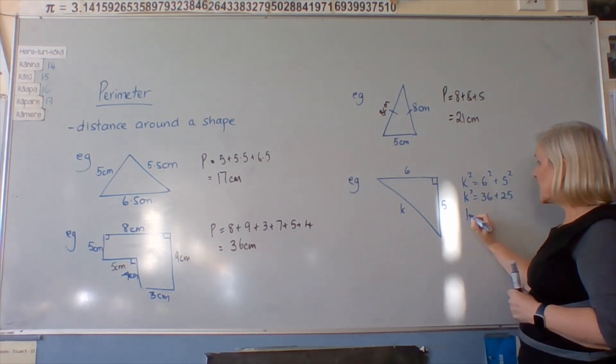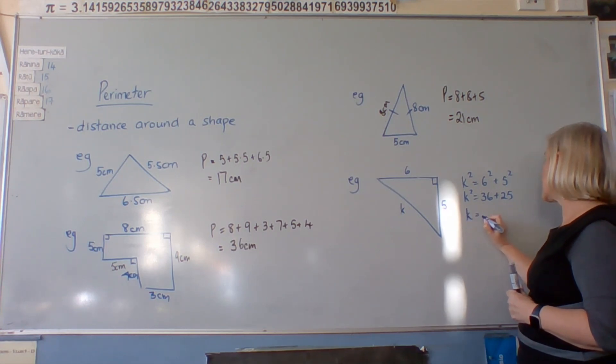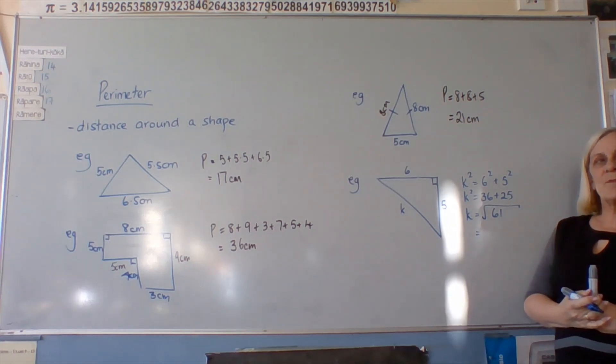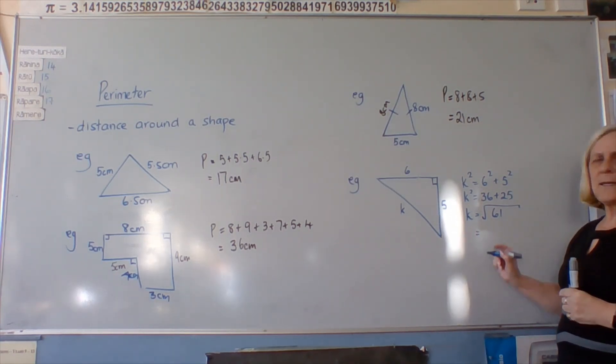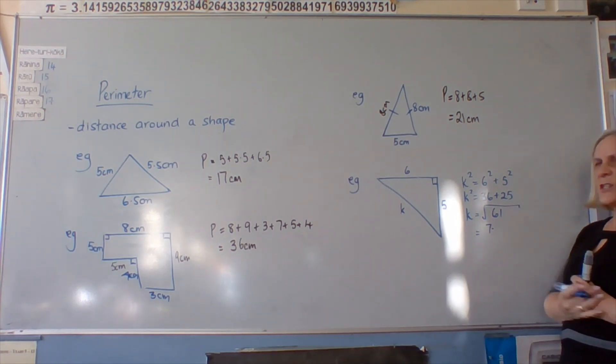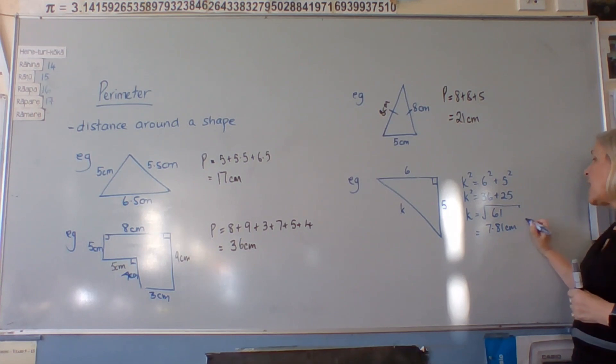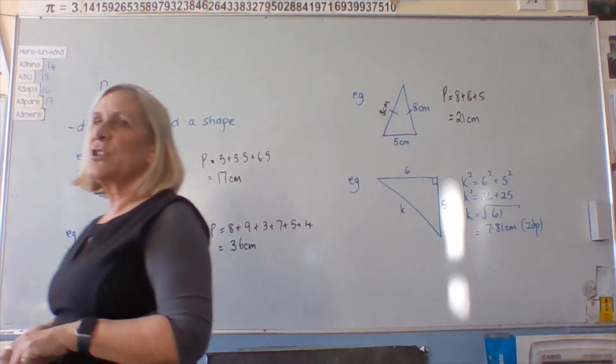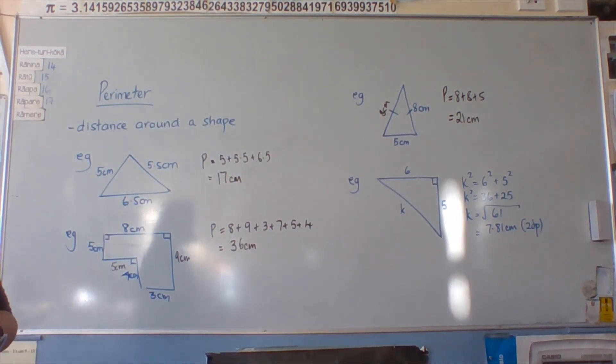So K will equal the square root of 61, which equals 7.81 centimetres. This time I have rounded, I hope correctly. So I will put that I rounded it to two decimal places. All right?